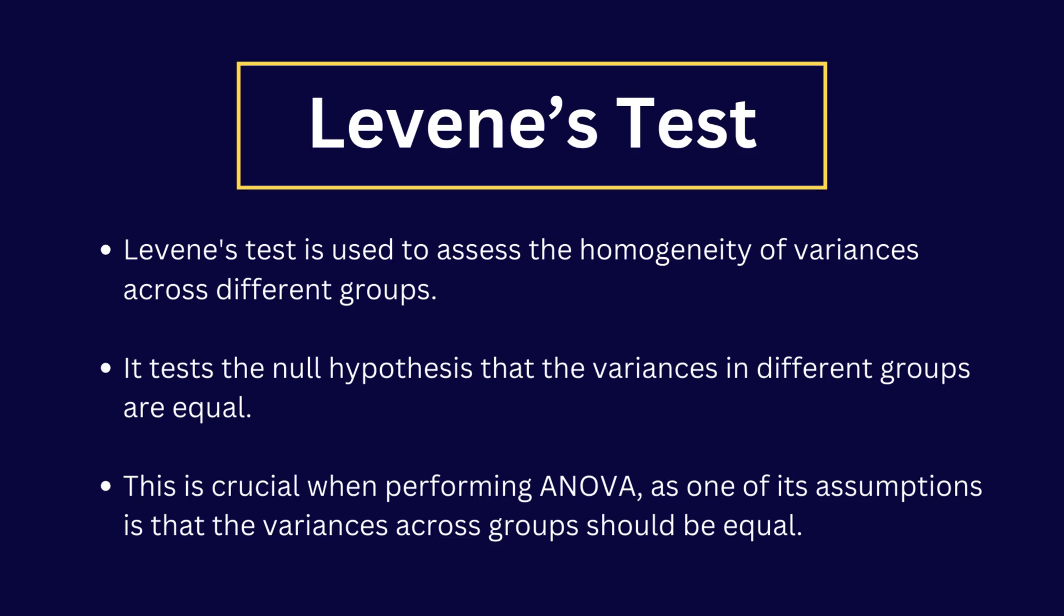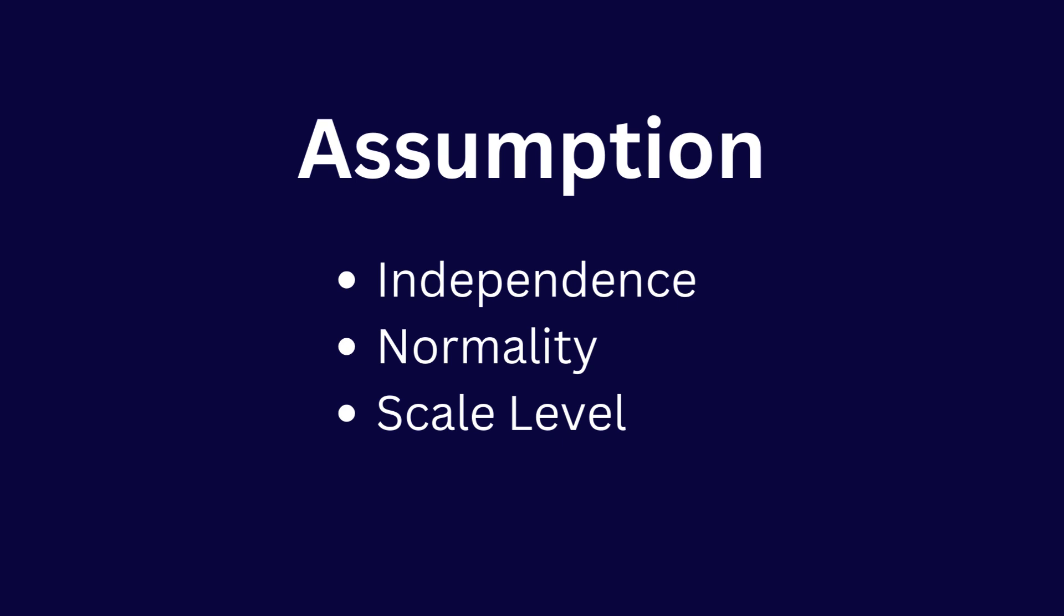Levene's test is used to assess the homogeneity of variances across different groups. It tests the null hypothesis that the variances in different groups are equal. This is crucial when performing ANOVA, as one of its assumptions is that variances across groups should be equal.